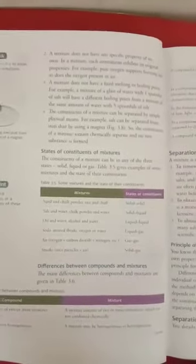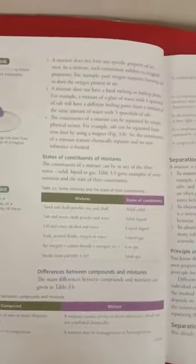Mixtures do not have any specific property of their own. Mixtures do not have their own property. Just like air - air is a mixture. It has different types of gases and substances in it. For example oxygen, carbon dioxide, nitrogen.